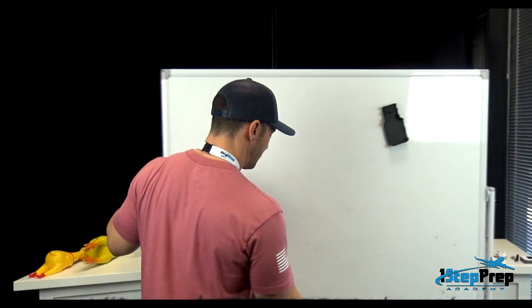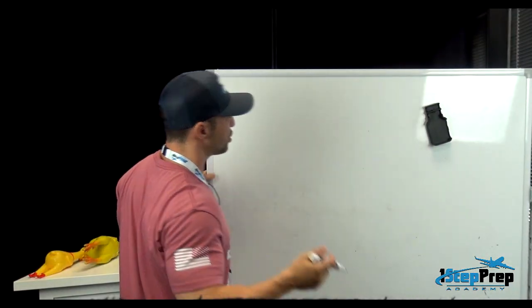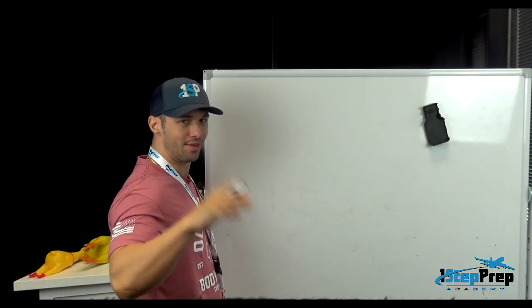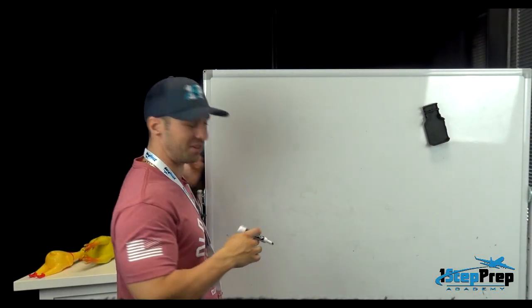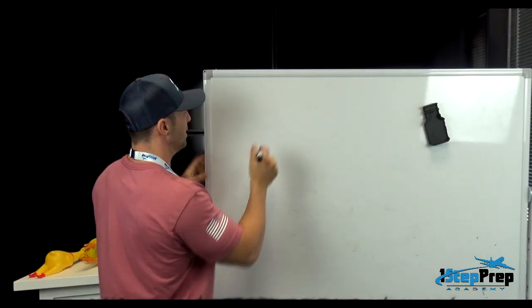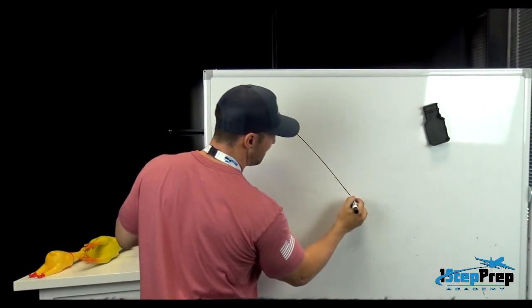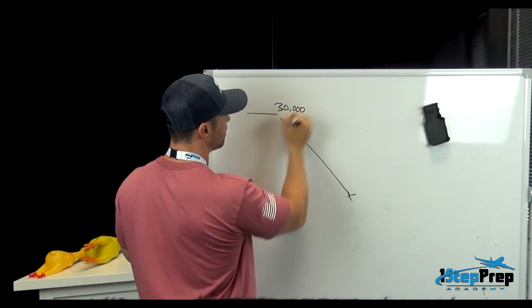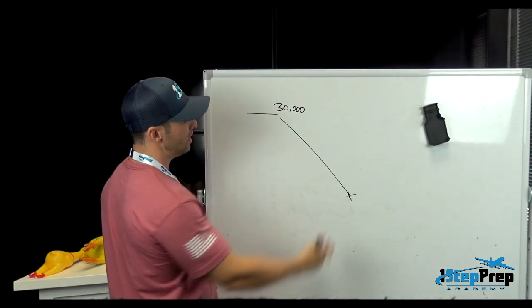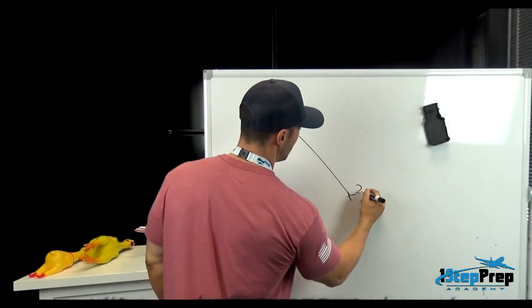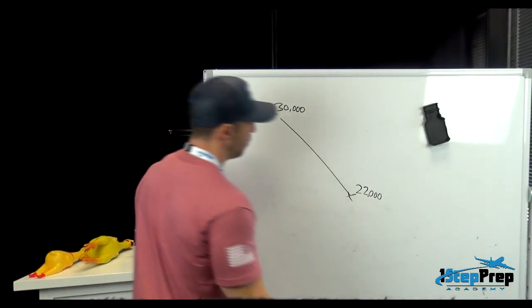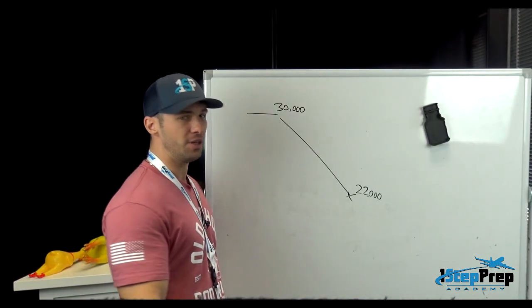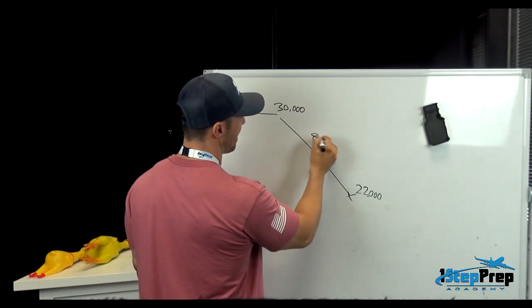Let's dive into some energy management, 3-to-1 descent planning. I really want to share a few things with you that have to do with calculating whether or not you're going to meet a constraint — whether you're in any kind of airplane, 320, 737, using VNAV or managed descent. Let's say you are descending to meet a constraint, starting at flight level 300, so 30,000 feet, and you need to cross a constraint at 22,000 feet, or flight level 220. That gives us a total of 8,000 feet to lose.